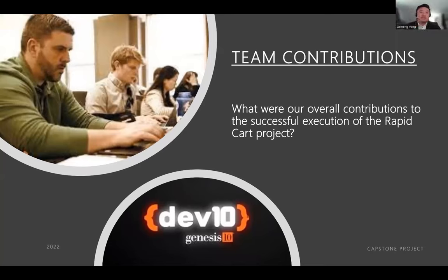My name is Jermaine Vang. The contributions I made to this project on the back end were working with the items and cart entities, all the way from the interfaces and the repository to the web API controllers. On the front end, I mainly assisted with functionality — buttons, the search bar, as well as the order list — and helped style the web app.